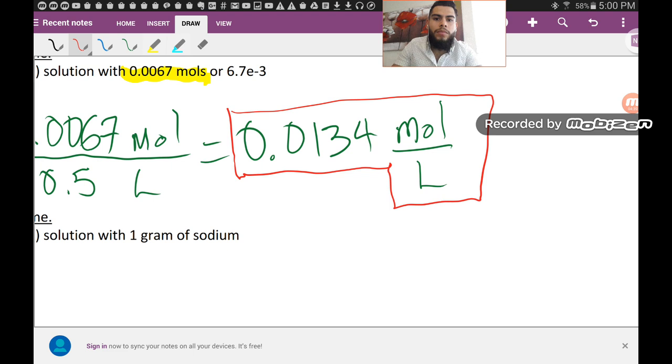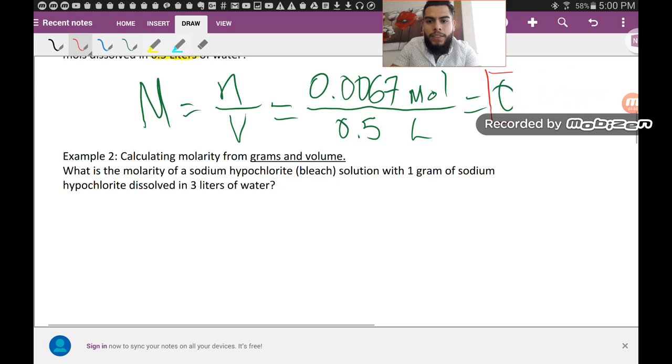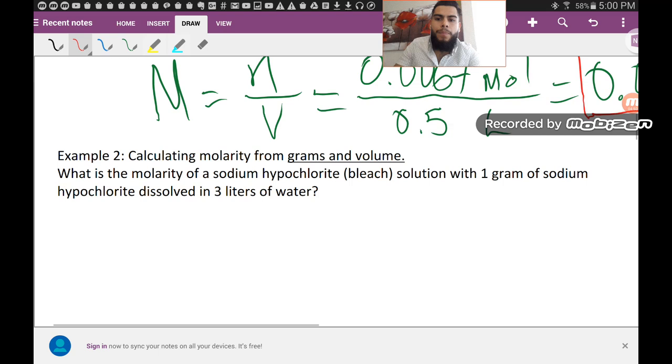We're going to move on to another example. Example 2: calculating molarity from grams and volume. What is the molarity of a sodium hypochlorite bleach solution with 1 gram of sodium hypochlorite dissolved in 3 liters of water? So molarity.